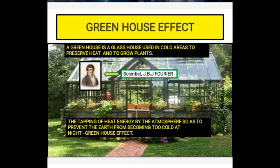Now an interesting topic — the greenhouse effect. A greenhouse is a glass house used in cold areas to preserve heat and grow plants. The glass allows shortwave solar radiation to enter but does not allow long-wave radiation to move out, so the temperature inside is more than outside. A part of the sun's energy reaches the earth's surface, and a part is absorbed and retained. There is an energy balance between the heat energy reaching the earth and the heat re-radiated into space, and this balance determines the temperature on the earth's surface.